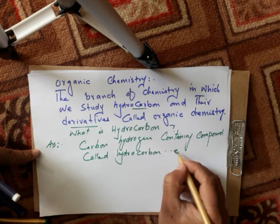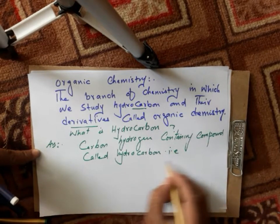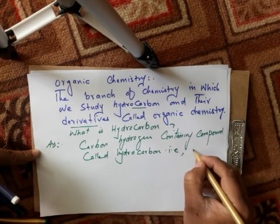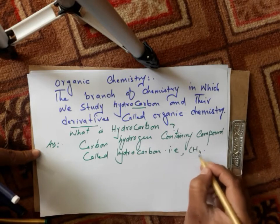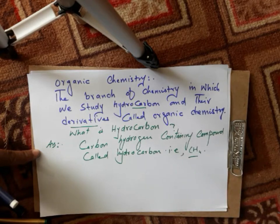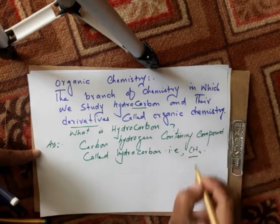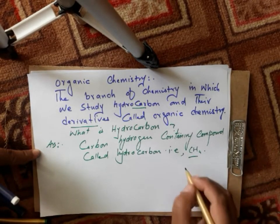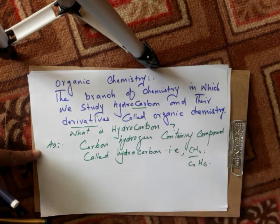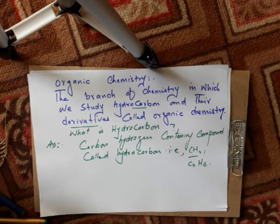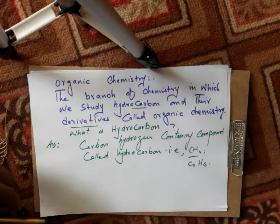Carbon and hydrogen containing compounds are called hydrocarbons. For example, methane (CH4) is an organic compound. Another example is ethane (C2H6). These compounds contain carbon and hydrogen and are called hydrocarbons.